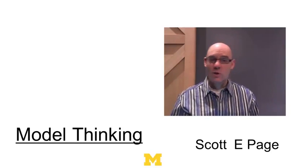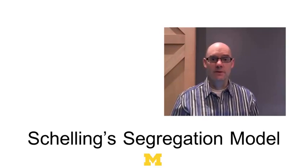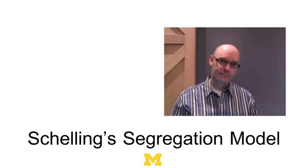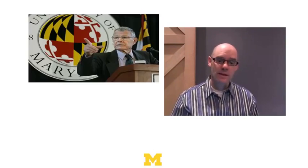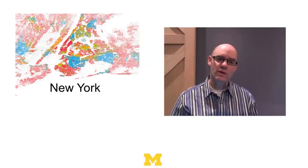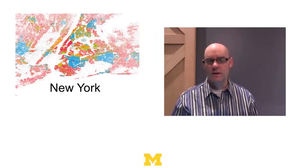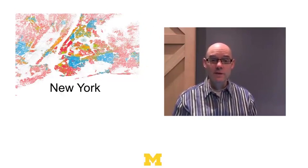In this lecture, we're going to talk about a famous model from social science. This model is known as Schelling's Spatial Segregation Model, developed by Thomas Schelling, an economist at the University of Maryland. What Schelling was trying to do was understand an empirical phenomenon — that phenomenon being segregation.